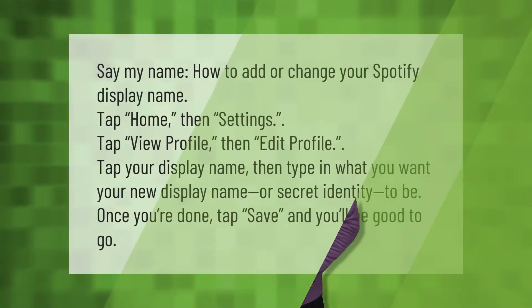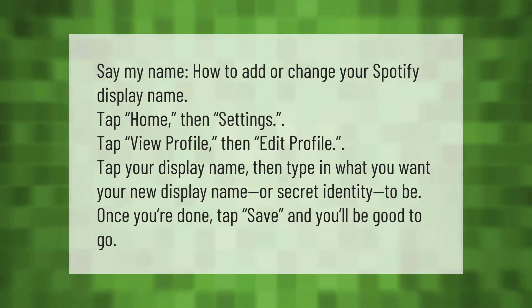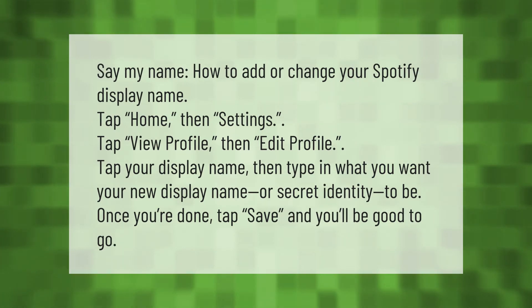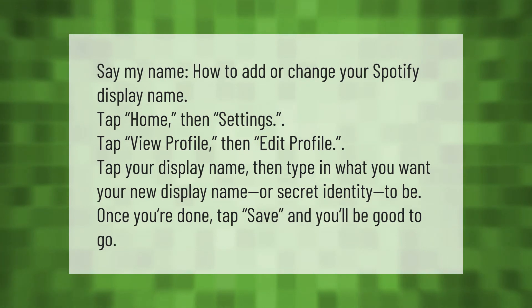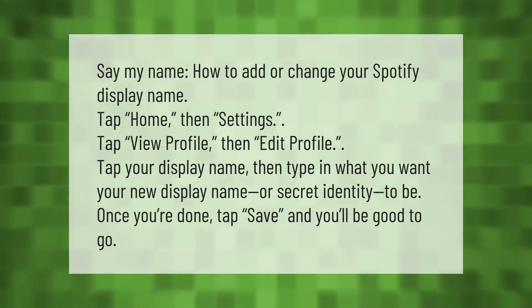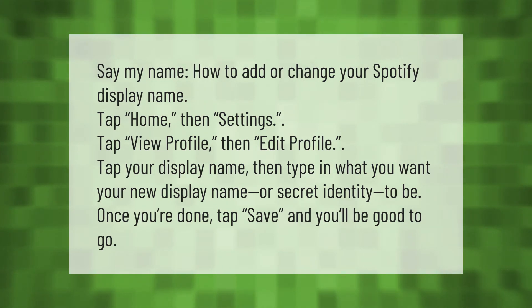How to add or change your Spotify display name: tap Home, then Settings. Tap View Profile, then Edit Profile. Tap your display name, then type in what you want your new display name or secret identity to be. Once you're done, tap Save and you'll be good to go.